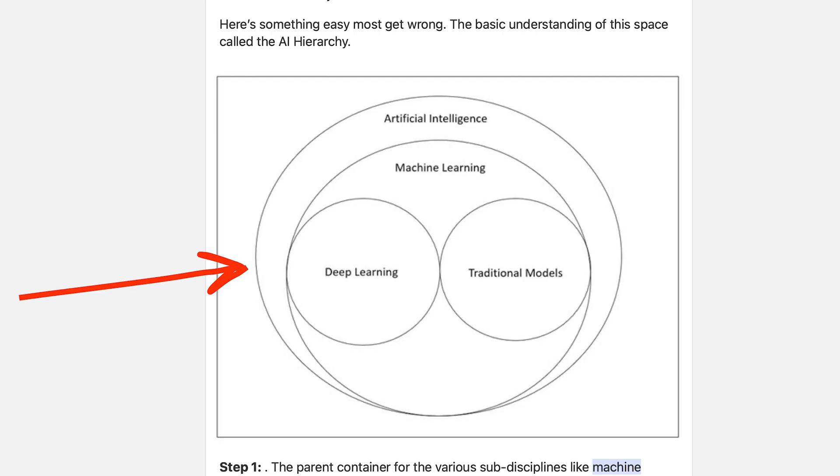Let's dig a little deeper — pun intended. What is deep learning, and where does it live? Deep learning is a form of machine learning that's loosely inspired by the structure of the human brain, and particularly effective in feature detection. Here's the tricky part: deep learning is machine learning. Notice the hierarchy — inside of AI lives machine learning, and inside of machine learning, there is deep learning.